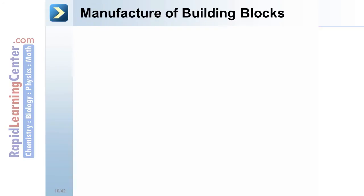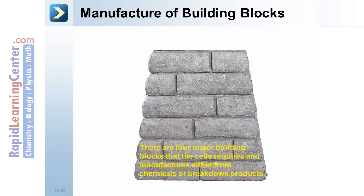Manufacture of building blocks. There are four major building blocks that the cell requires and manufactures either from chemicals or breakdown products. These four building blocks include nucleic acids, carbohydrates, proteins, and lipids.